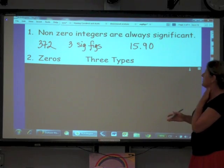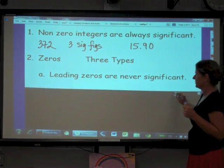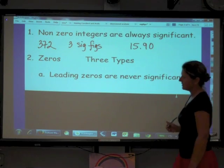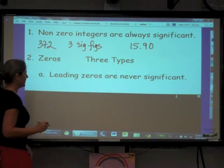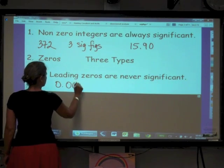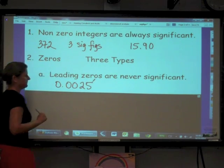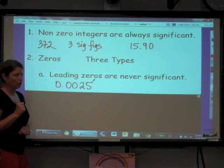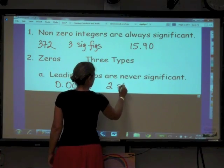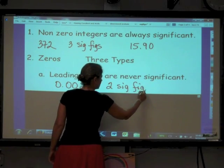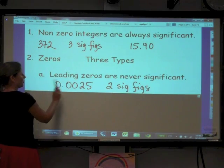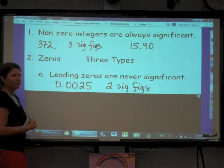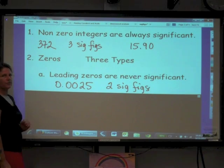There are three types of zeros. There are leading zeros. Leading zeros are never significant. So for instance, if we look at a number like 0.0025, how many sig figs in this number? There are only two significant figures. Because these one, two, three zeros, these are leading zeros. They go in front. They're basically placeholders is what they are. And so they are never significant.